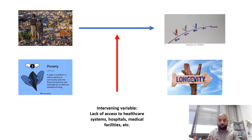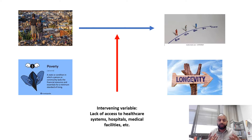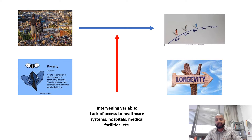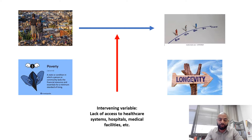That is what an intervening variable is — when introduced into a research study, it establishes a relationship between an independent variable and a dependent variable when ordinarily there is no obvious causal relationship between them. It is essential in such cases. I'll take another example and then show you how extraneous variables play a role in this kind of research.